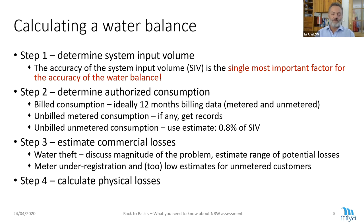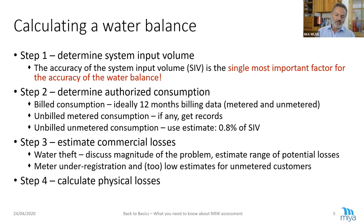Commercial losses — the water theft — we can only estimate. If we would know how many illegal connections, we would do something against it. But we need to estimate the range. Can it be 0 illegal connections? In low and middle income countries, normally the answer is no. Do we have 20%? That is too high. So we say maybe 5%, maybe 10%, and then we give an error range. The meter under-registration — ideally we do meter testing and have numbers. We also need to consider that estimates for unmetered customers can be too low, which comes into commercial losses. At the end, after all of this, we deduct everything from the system input volume and we get our physical losses.